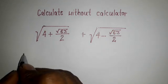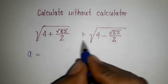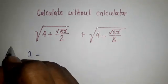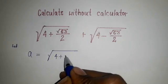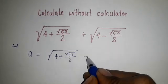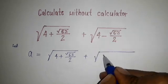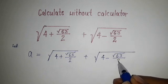We will consider this as a variable. I am putting a equal to the square root of 4 plus square root of 63 divided by 2, plus the square root of 4 minus square root of 63 divided by 2.